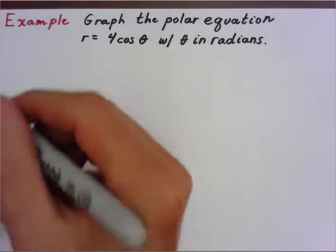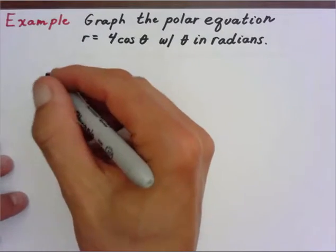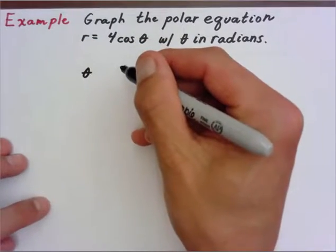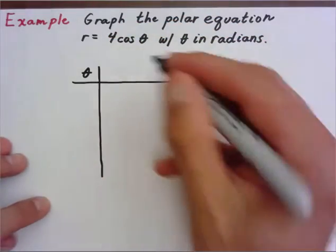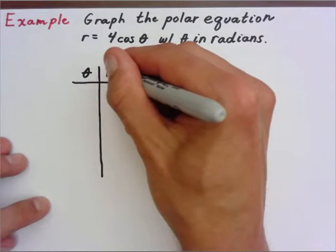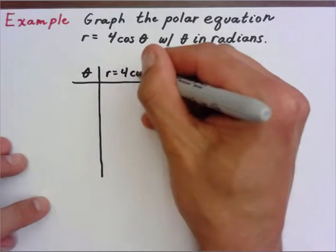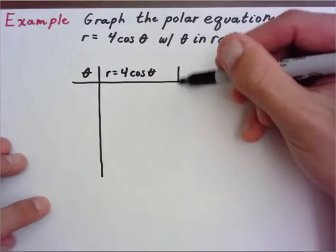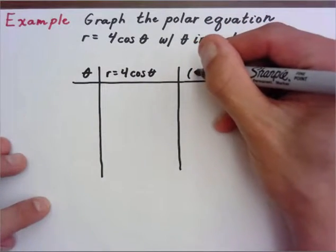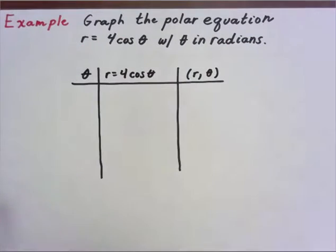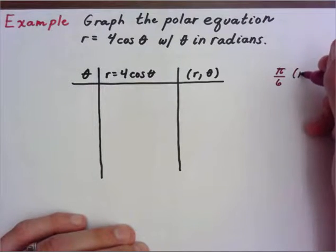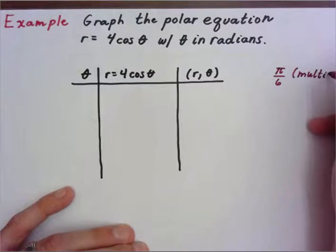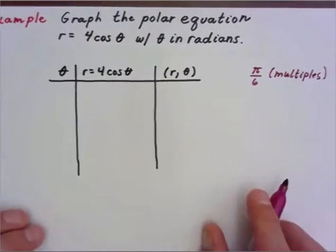I'm going to make a table of values. We're going to have theta and the value of r, where r equals four cosine theta. Then we're going to write the ordered pair so we know what to plot. In this specific example I'm going to go in pi over six multiples — that can change depending on the graph, but at least with this we'll get enough points to plot.